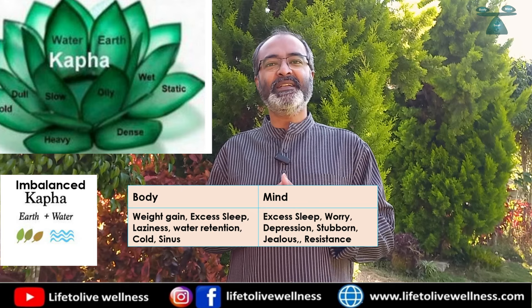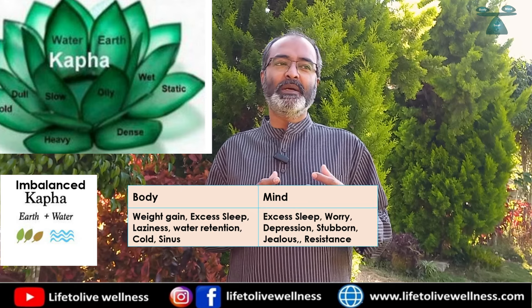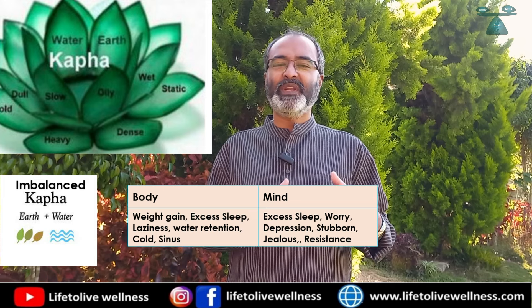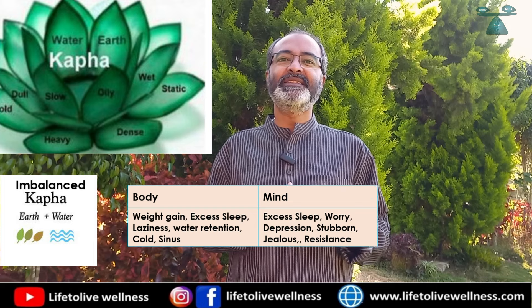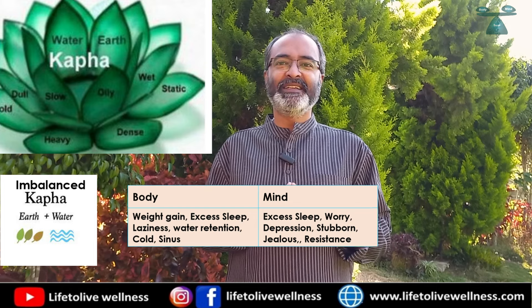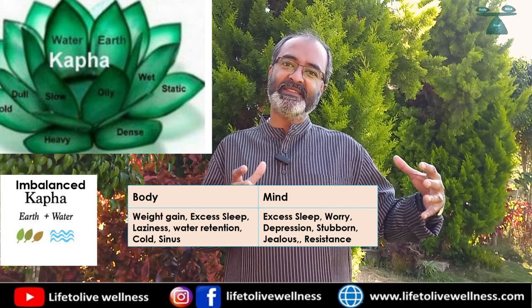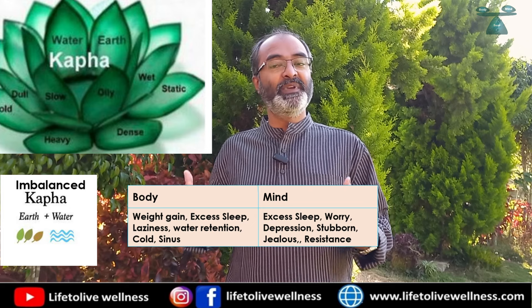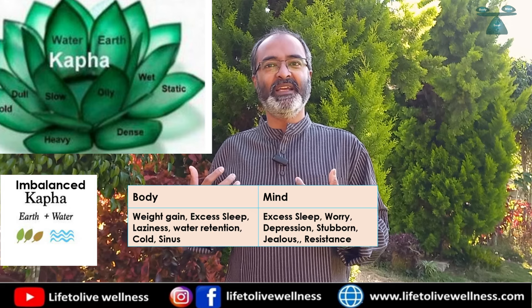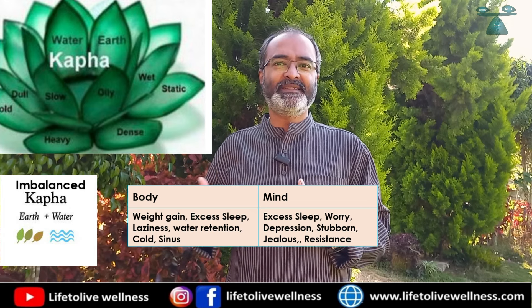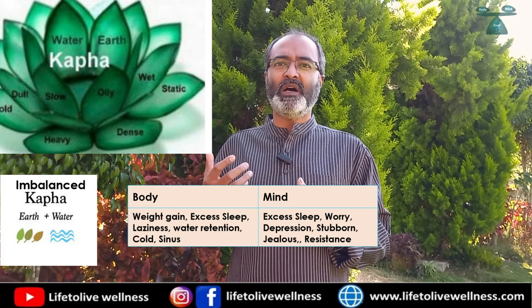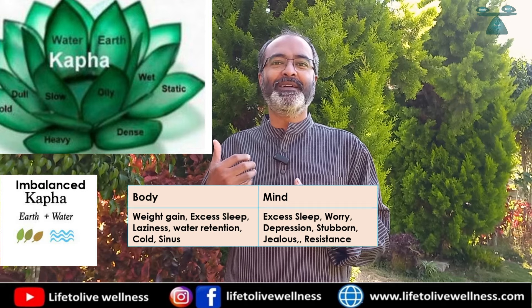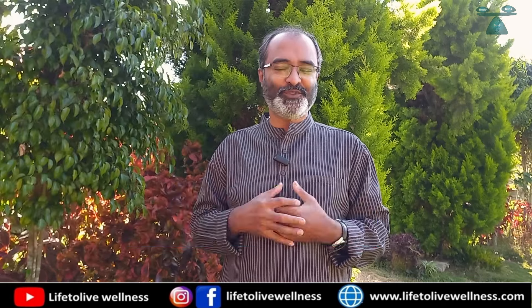If kapha becomes imbalanced, on the mental side it makes you more possessive, greedy, and very stubborn — not believing or letting go of things easily. Depression, worry, and sadness build in the mind. On the physical side, the immediate reflection of kapha imbalance is weight gain and obesity. Water-related diseases like cough, cold, asthma, and bronchitis start dominating in the body. This is the tridosha or vata-pitta-kapha theory.